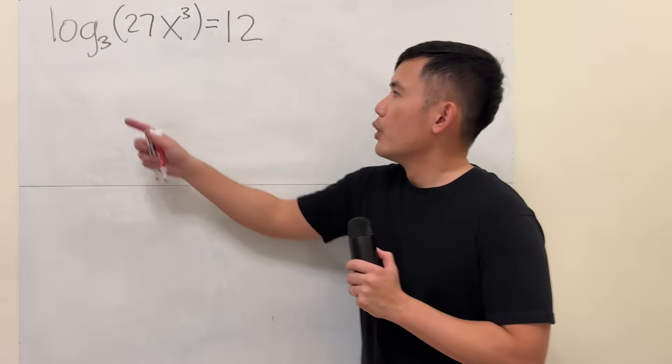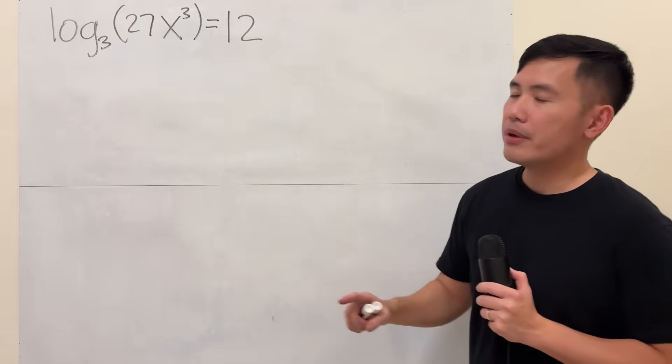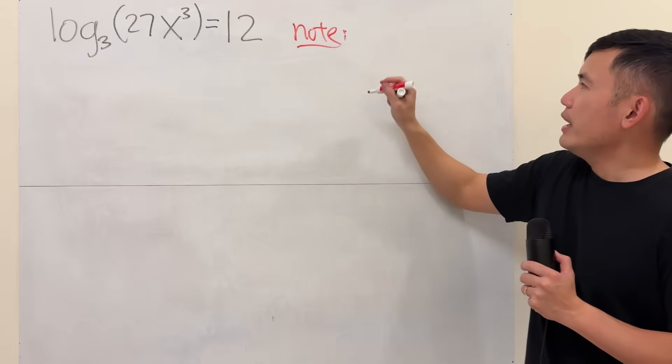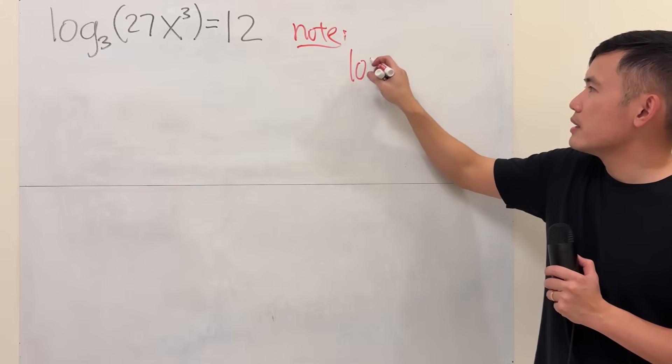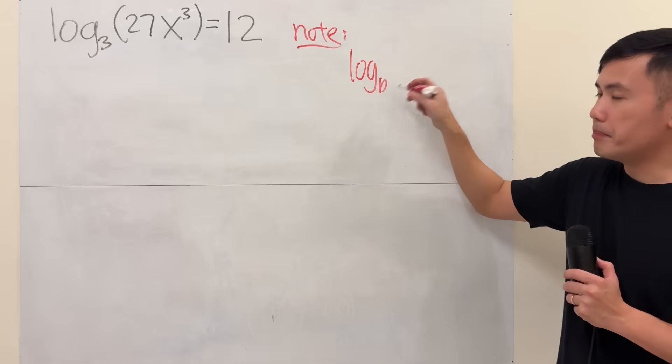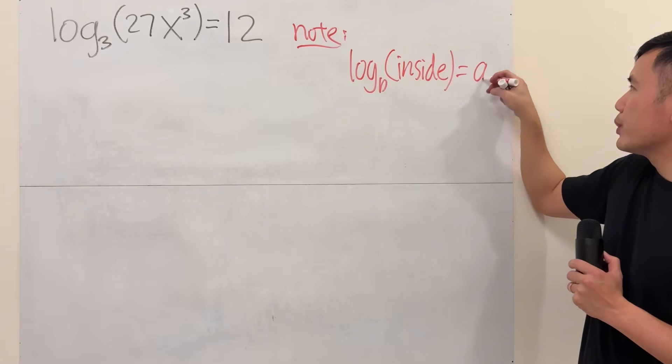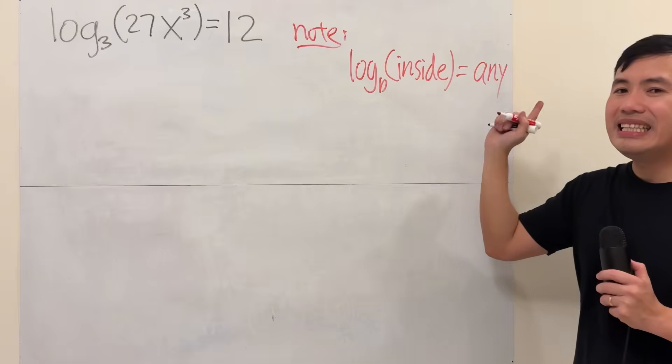First way, we have just one log equal to a number, then we can do the following. So here is a quick note on the side. Whenever we are solving a log equation, log base b, and let's say we have some expression inside, and let's say this is equal to a number, it can be any number.